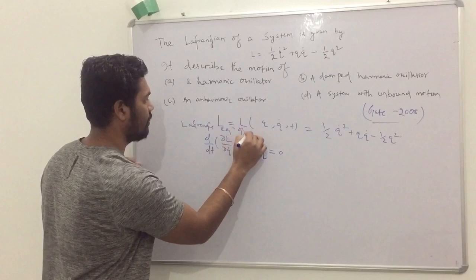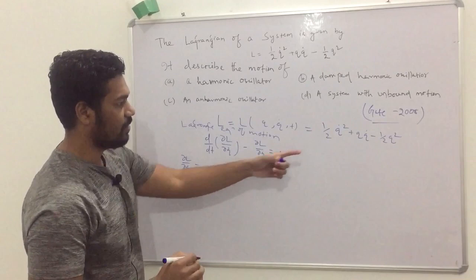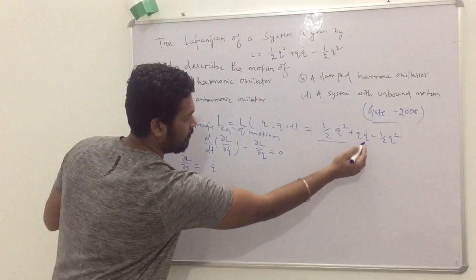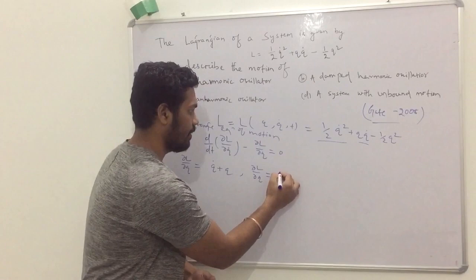To solve this equation, you have to find ∂L/∂Q̇, which equals Q̇ plus Q. And ∂L/∂Q equals Q̇ minus Q.